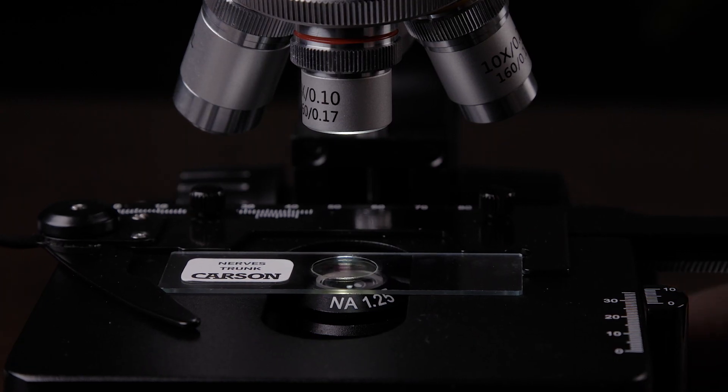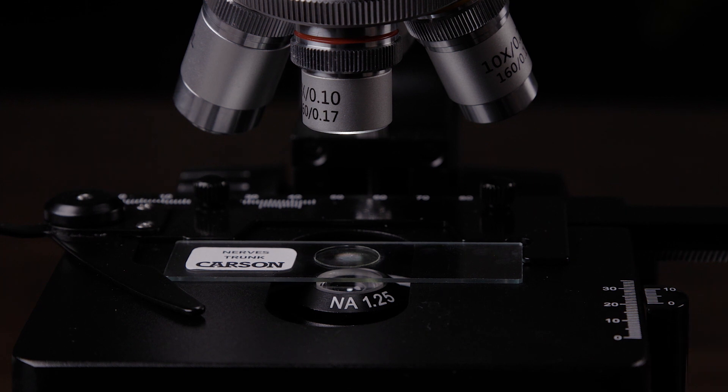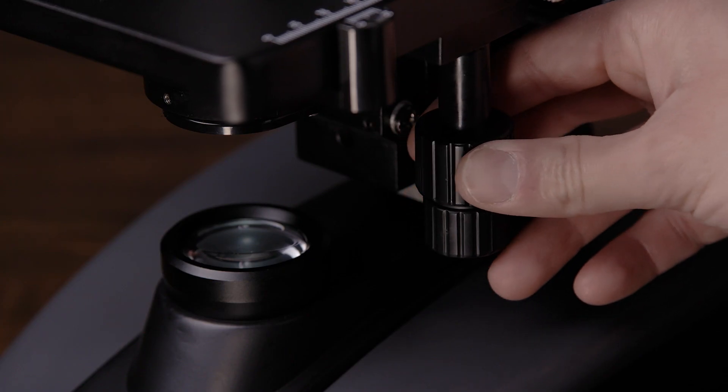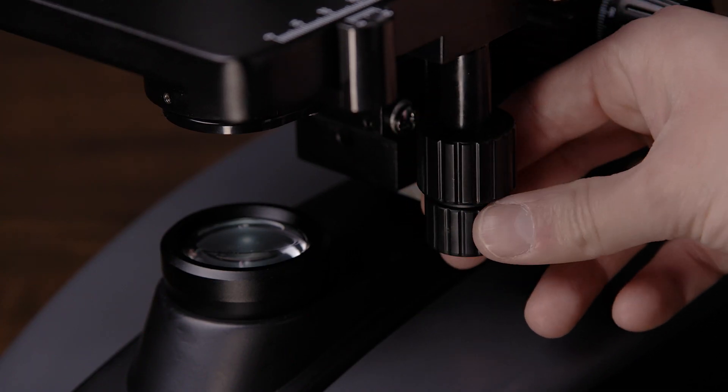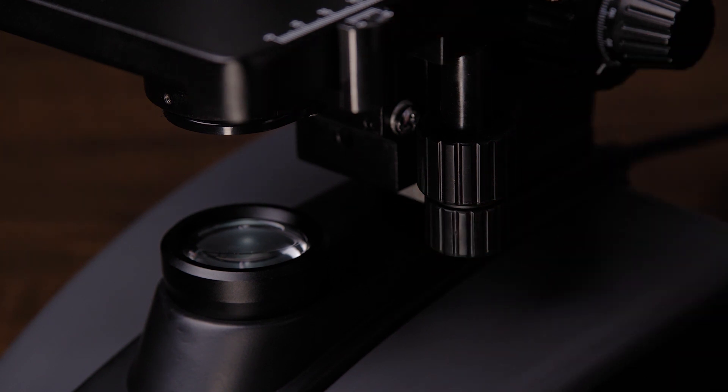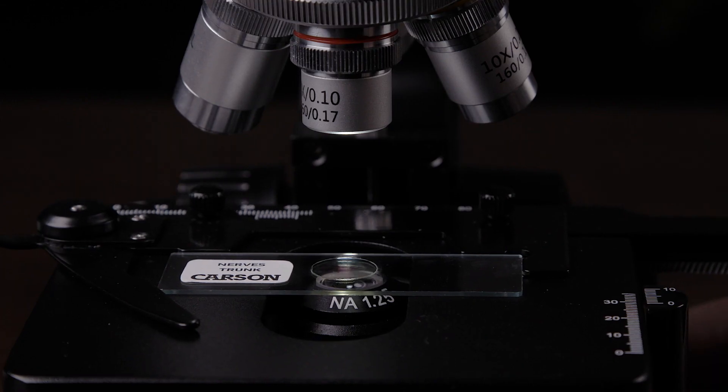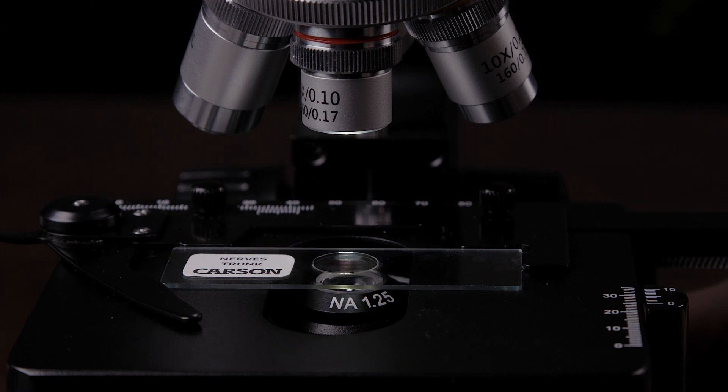Next, adjust and center your slide using the stage. When using the mechanical stage, there are two knobs to move it up or down, left or right. You want to move it so the light is centered on the part of the specimen you want to look at.